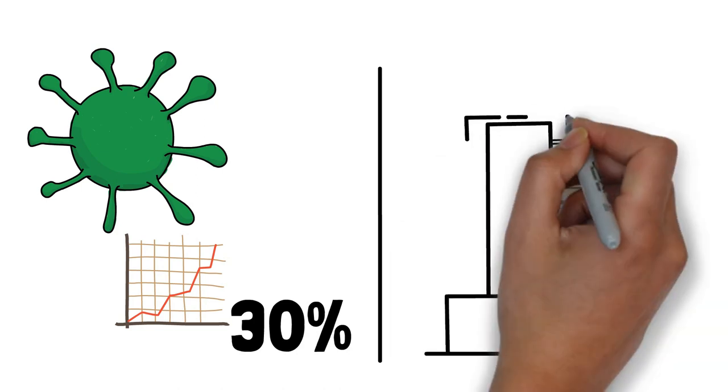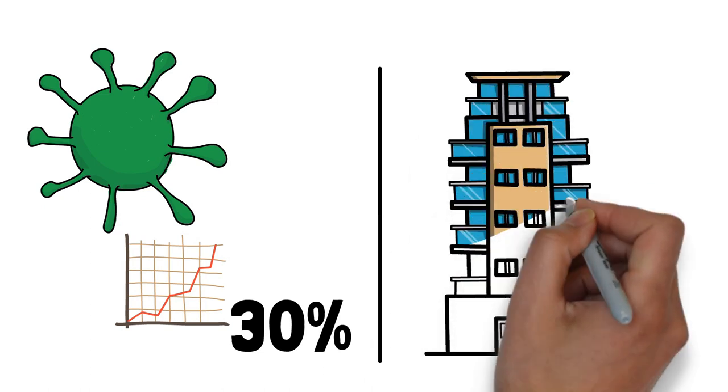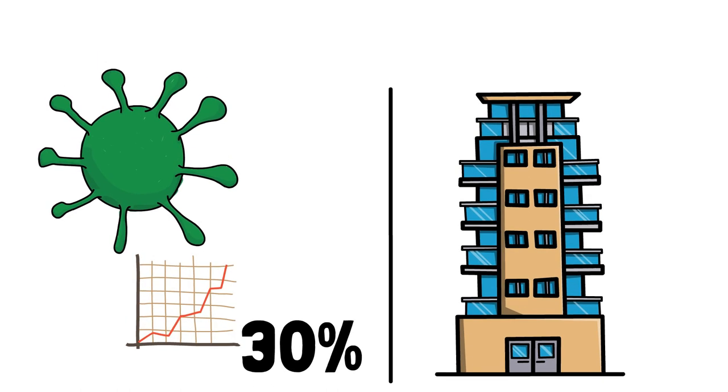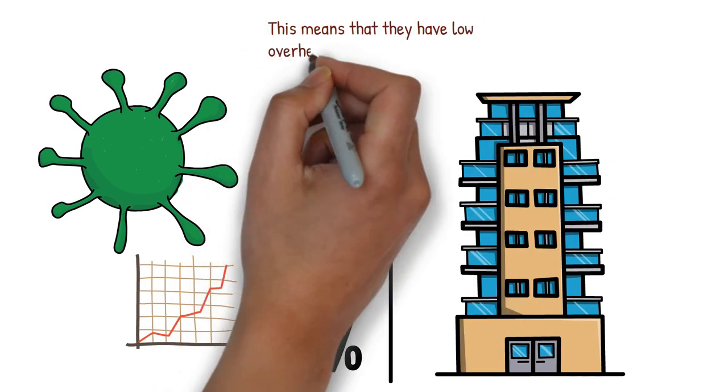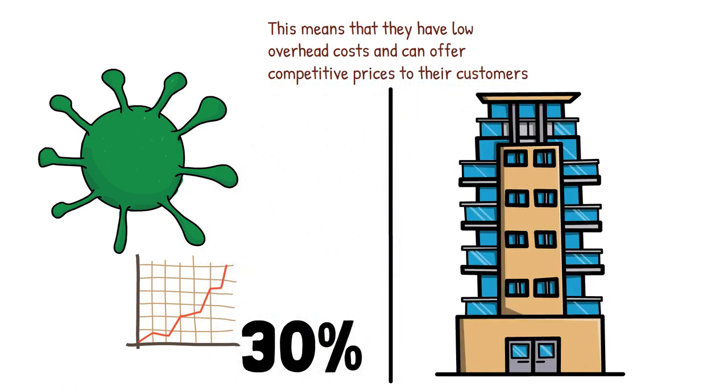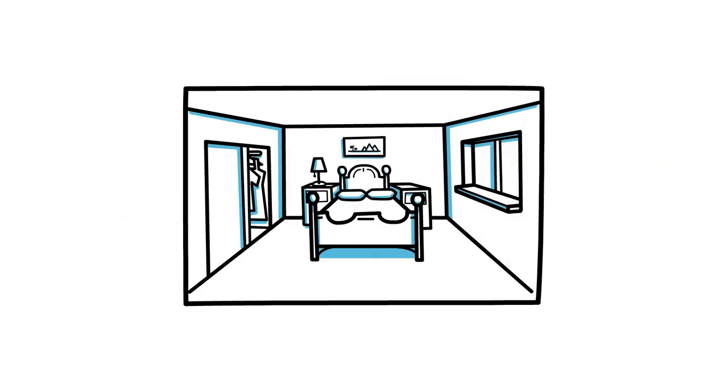Secondly, Airbnb's business model is unique and innovative. Unlike traditional hotel chains, they don't own any properties themselves. Instead, they rely on their hosts to provide the accommodations. This means that they have low overhead costs and can offer competitive prices to their customers. Plus, the personal touch of staying in someone's home is a huge draw for many travelers.